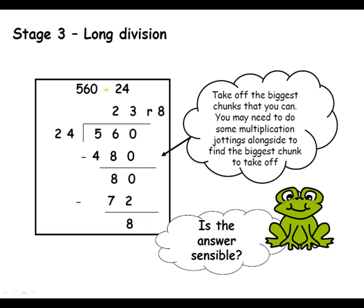Children would be encouraged to look at the answer and ask whether it is sensible, and possibly estimate a rough idea of what the answer might be near to. By the time a child is able to undertake such an operation, they would have a quite secure understanding of number in general. Year 6 also works with this method using decimal numbers — for example, 246.72 divided by tens and units. The understanding of division as repeated subtraction and chunking enables them to undertake any division.